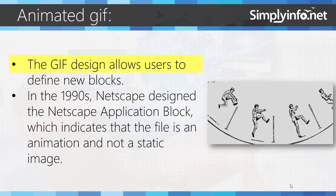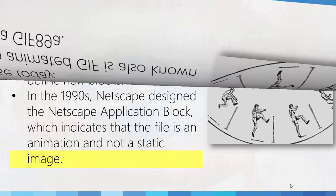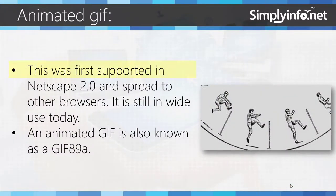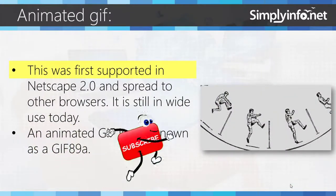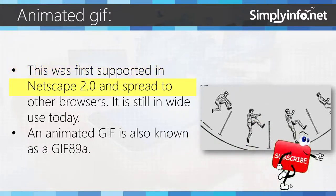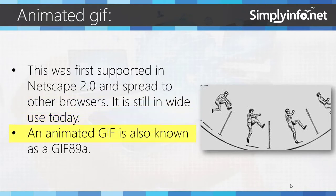The GIF design allows users to define new blocks. In the 1990s, Netscape designed the Netscape Application Block, which indicates that the file is an animation and not a static image. This was first supported in Netscape 2.0 browser and spread to other browsers. It is still in wide use today. An Animated GIF is also known as GIF-89A.